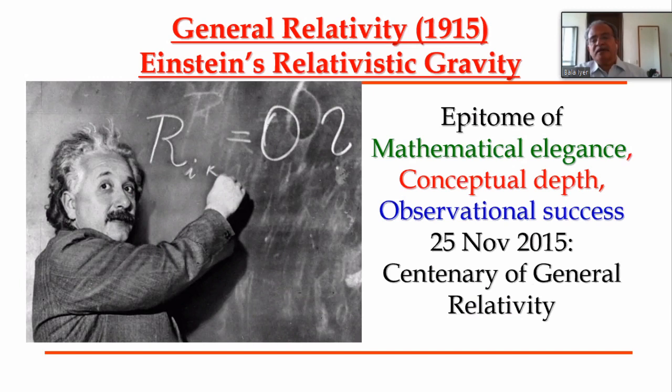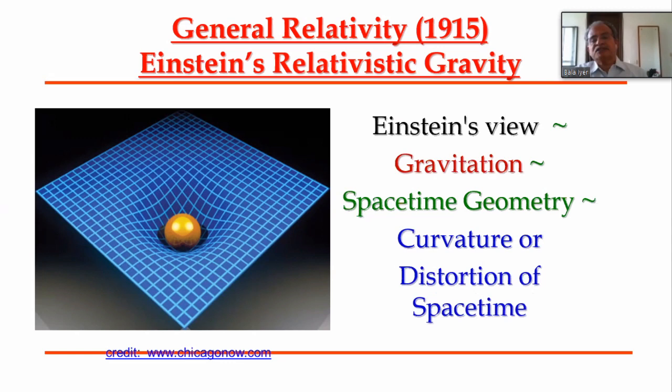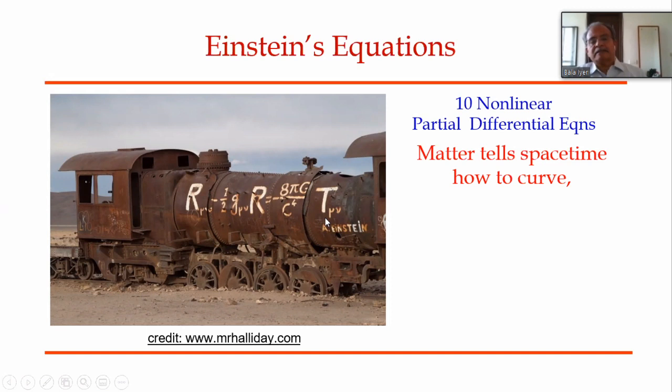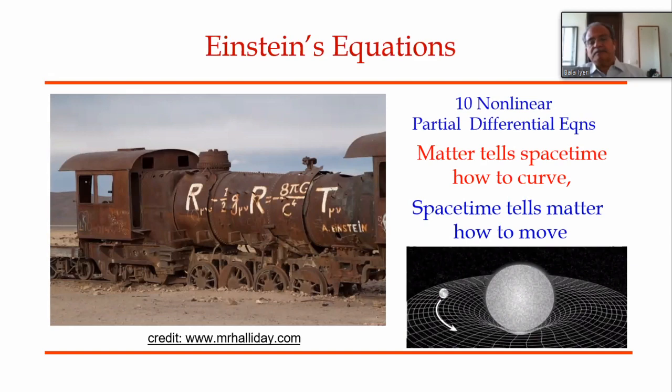On 25th November 2015, we celebrated the centenary of this remarkable theory. In Einstein's view, gravitation is synonymous with spacetime geometry and mathematically described by the curvature or distortion of spacetime. Gravity is described by Einstein's equations — a system of 10 nonlinear partial differential equations. Matter tells spacetime how to curve; in turn, spacetime tells matter how to move.